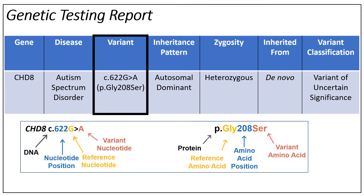On this example report, there is a box that says variant. This box tells us about the specific change to the DNA sequence and the specific change to the protein that gene makes. First, we see a c. dot with letters and numbers. The c. dot stands for coding, which is how we know this is describing the DNA variant. The number 622 after c. dot tells us there is a change at this specific location of the DNA sequence. The first letter is the nucleotide or DNA letter most people have at that position. The greater than sign means it changed to the DNA letter after the symbol. In this specific example, the G to A tells us at this position most people have a G, while this individual has an A.